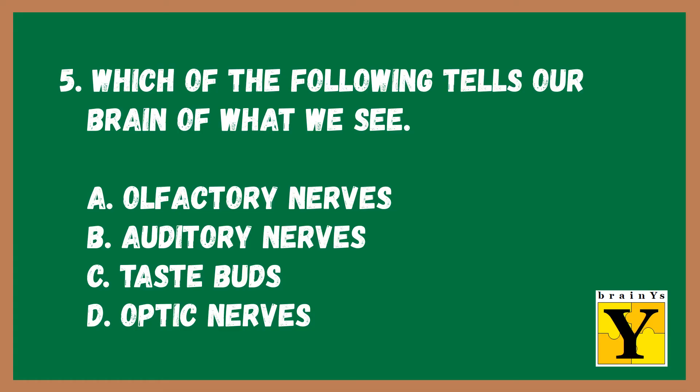Number five: Which of the following tells the brain of what we see? A. Olfactory nerves, B. Auditory nerves, C. Taste buds, D. Optic nerves.